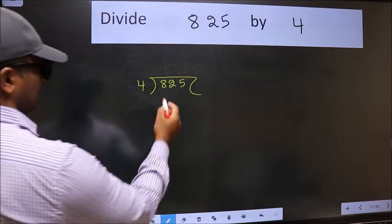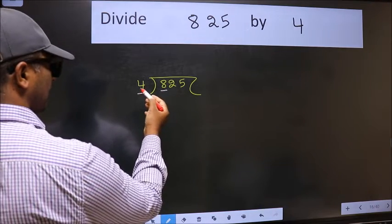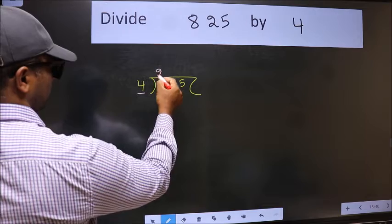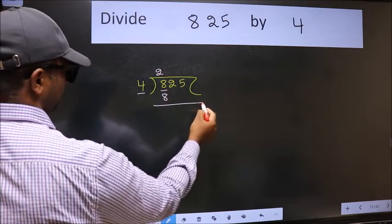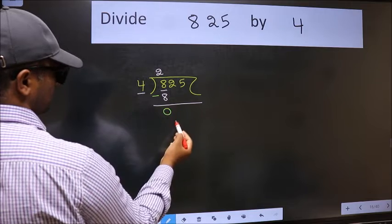Next, here we have 8 and here 4. When do we get 8 in the 4 table? 4 twos, 8. Now we should subtract. We get 0.